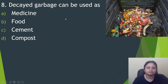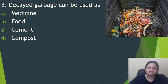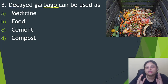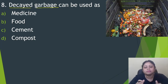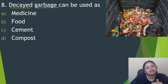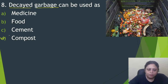Next question: decayed garbage can be used as? Option A, medicine. B, food. C, cement. D, compost. If garbage is decayed, we can use it as compost. Compost is used to help plants grow properly, as it contains nutrients which help plants grow. So the correct answer is option D, that is compost.